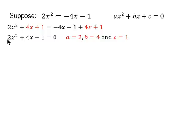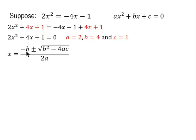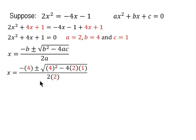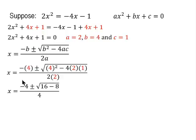Our a is 2, b is 4, and c is 1. Substituting into the quadratic formula: x equals negative b (that's negative 4), plus or minus the square root of b squared (4 squared is 16) minus 4 times a (2) times c (1), all over 2a (which is 4). Simplifying: negative 4 plus or minus the square root of 16 minus 8, which is the square root of 8, over 4.